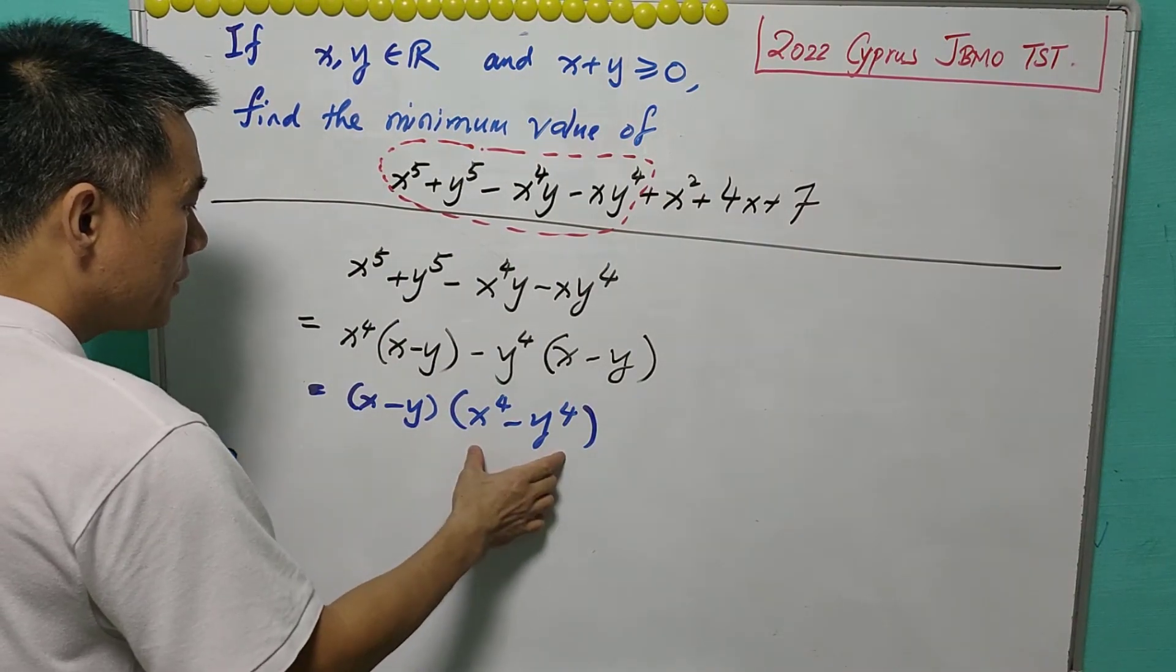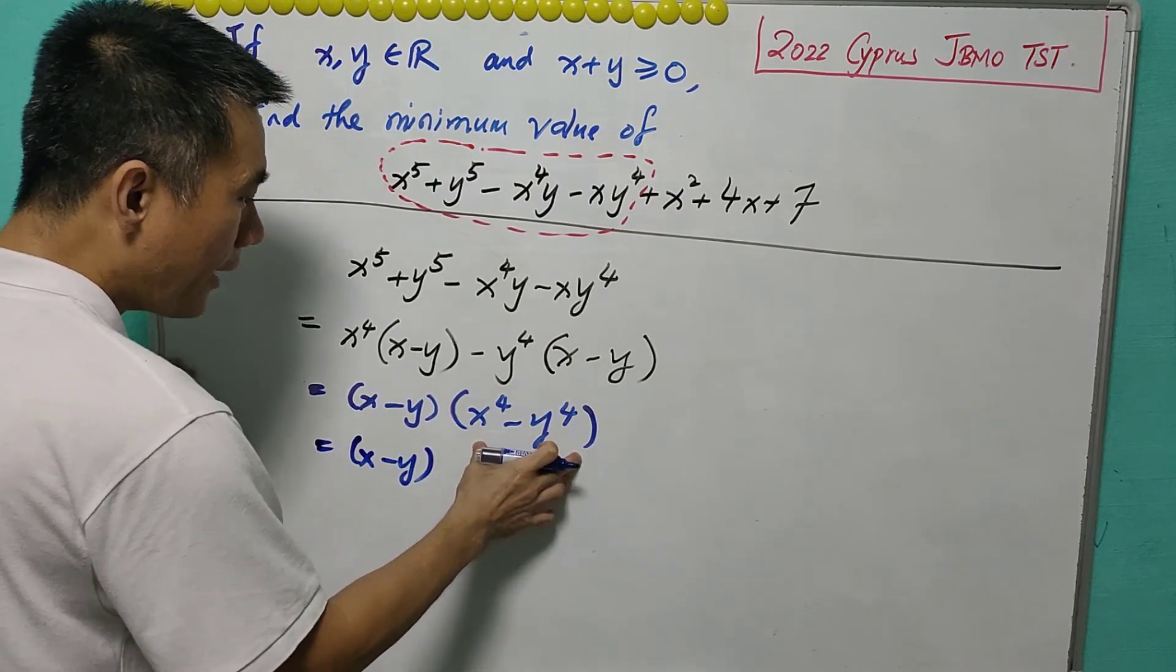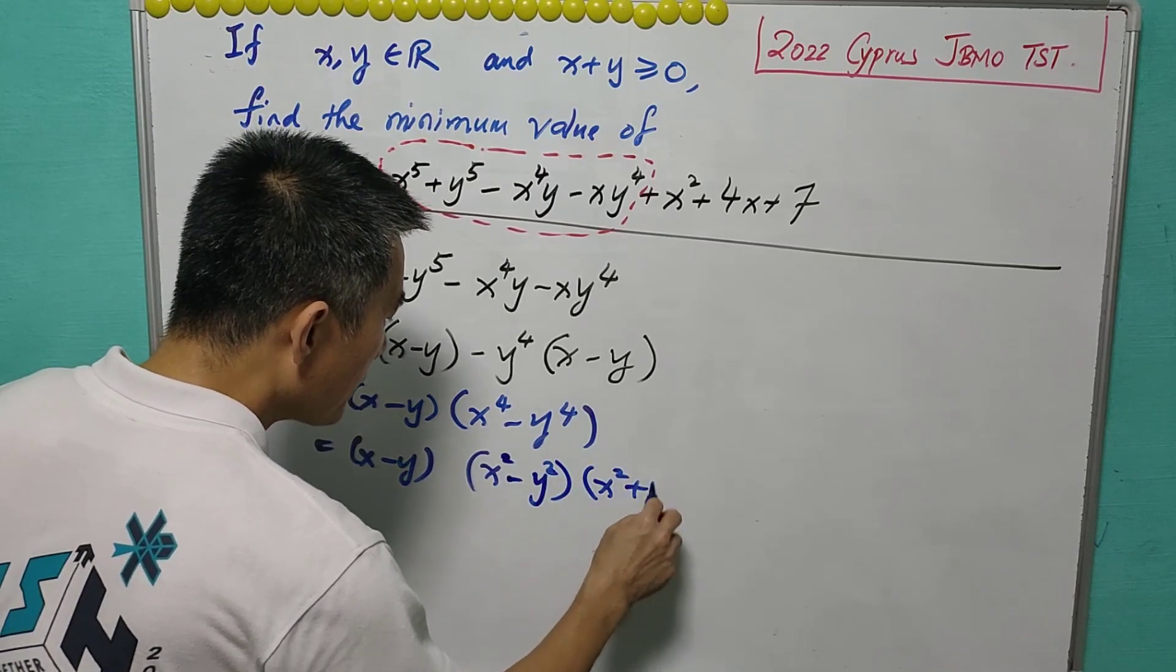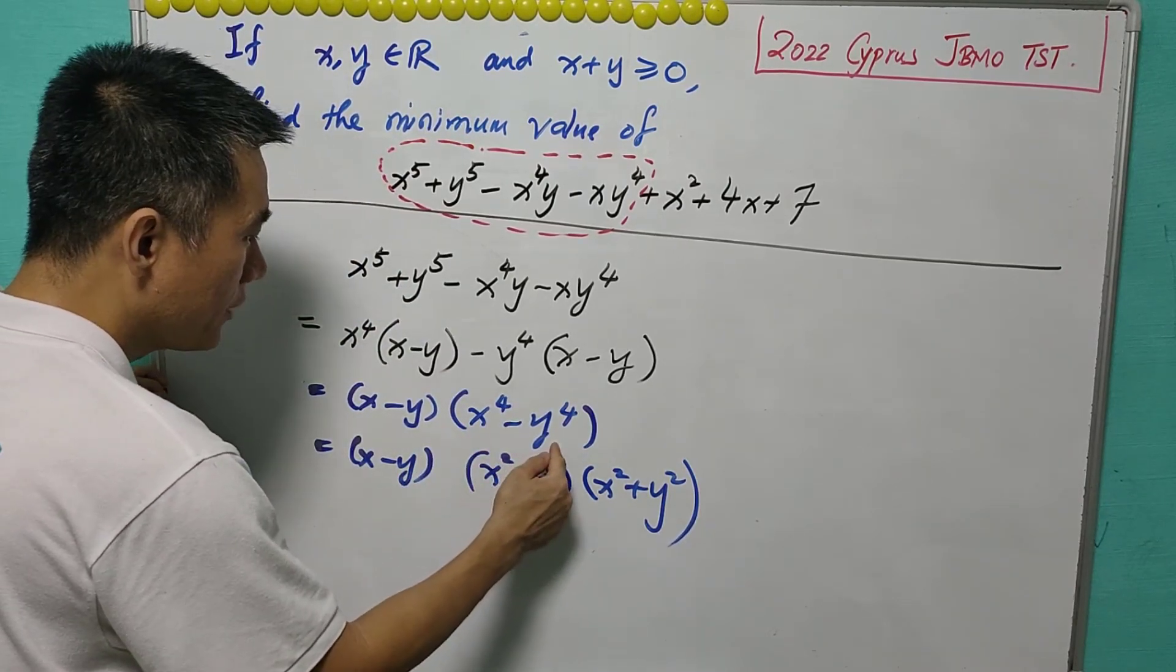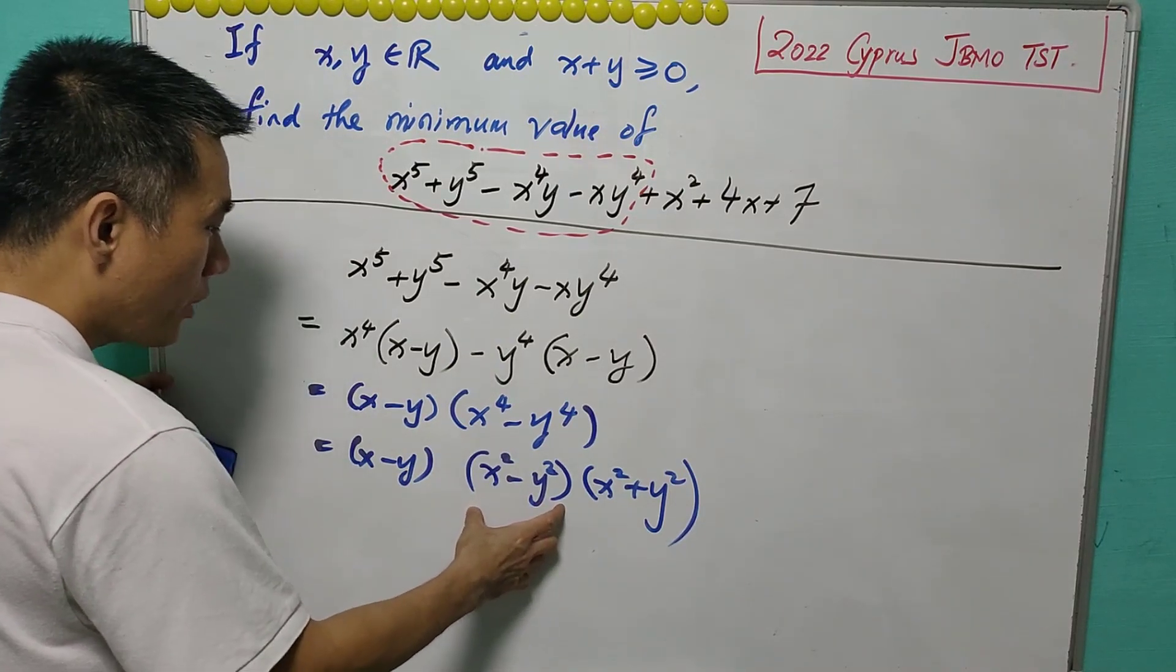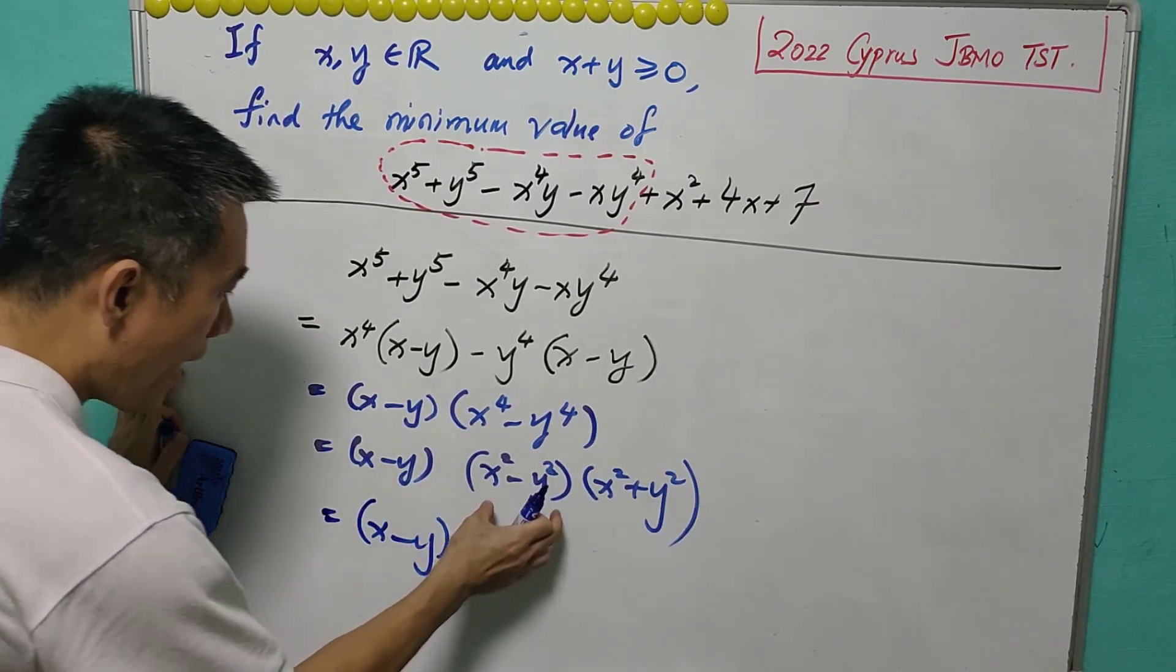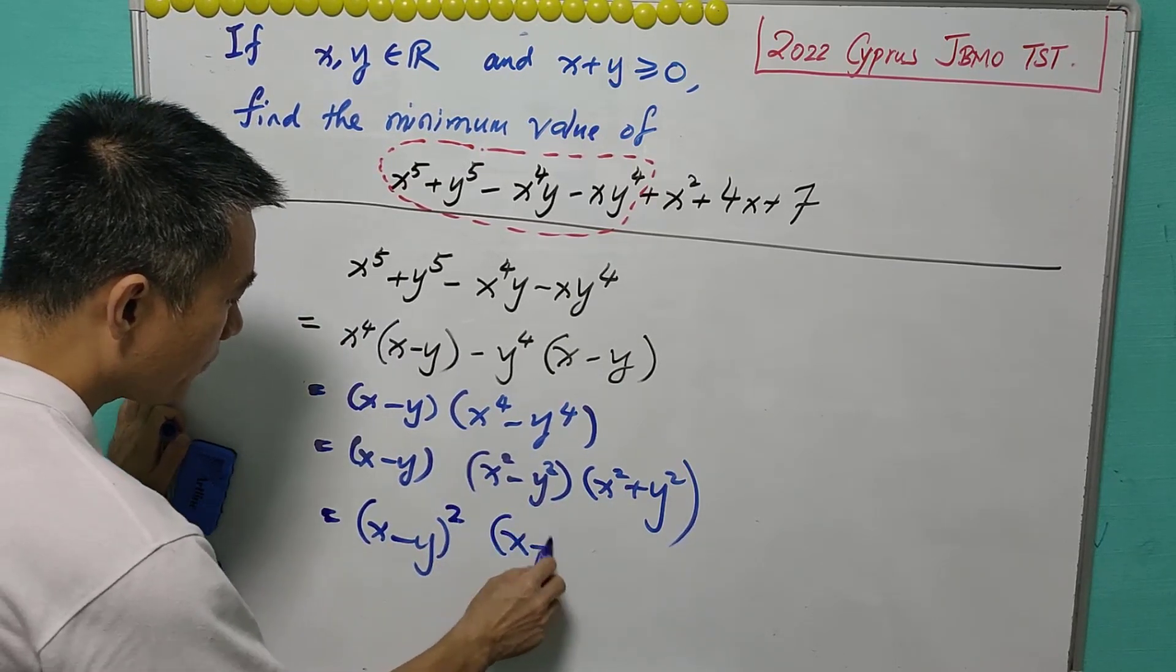However, we can further factorize it. So this is x minus y. For x^4 minus y^4, it can be written as x^2 minus y^2, and x^2 plus y^2. Because x^4 is square of x^2 and y^4 is square of y^2. And with this, x^2 minus y^2 can further factorize as x plus y, x minus y. So it is x minus y, x plus y. x minus y combined with this, it becomes a square, x plus y.